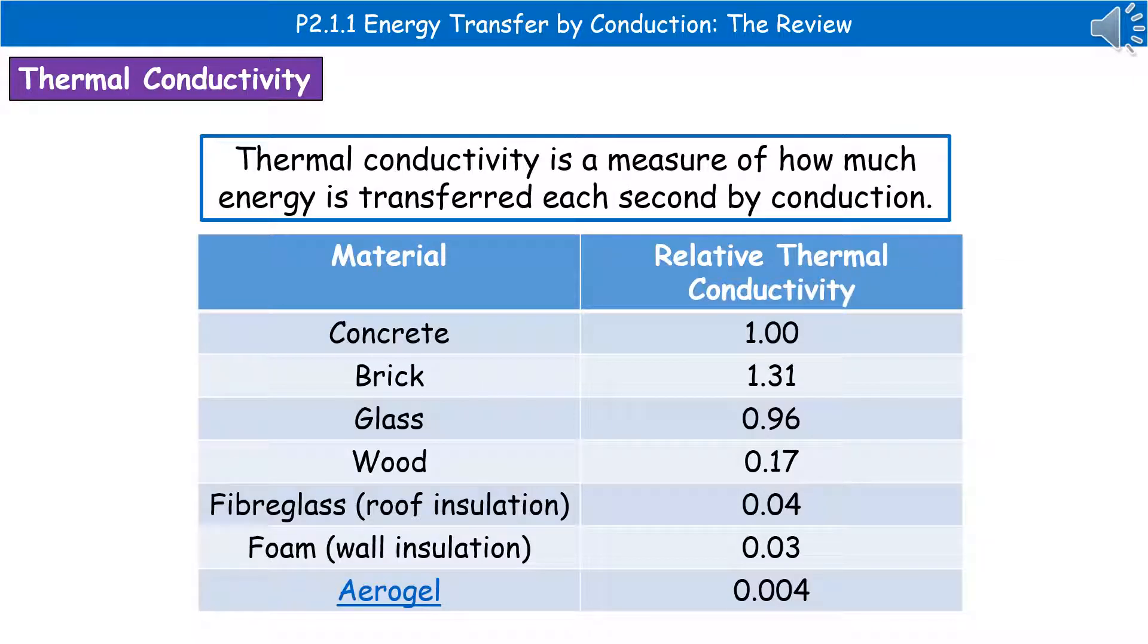One of the important things we need to understand about energy transfer by conduction is thermal conductivity. When we're talking about the thermal conductivity of a sample, we're looking at how much energy is transferred each second by conduction. In the table at the bottom, I've given you a range of different common household materials and their relative thermal conductivities. What you find is that the lower the value of that relative thermal conductivity, the better that substance is at insulating. The best one in that table is aerogel.